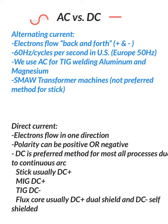Alternating current versus direct current in welding. Alternating current is electrons flowing back and forth, so you'll have both positive and negative cycles, or polarities. 60 Hertz or cycles per second is what is used here in the U.S.